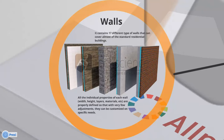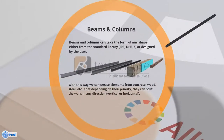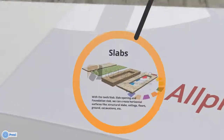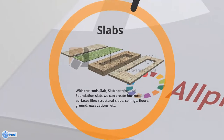Beams and columns can take the form of any shape, either from the standard library or designed by the user. In this way we can create elements from concrete, wood, steel, etc., that depending on their priority can cut the walls in any direction — vertical or horizontal.